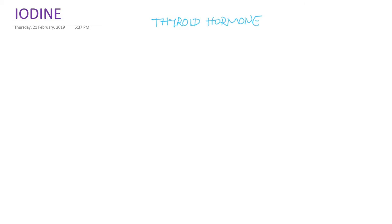There are two thyroid hormones: T3 and T4. T3 is called triiodothyronine, and T4 is tetraiodothyronine — meaning this thyroid hormone contains an important trace element, iodine. This thyroid hormone is synthesized from the thyroid gland, which is located in front of the neck. It has got two lobes connected by an isthmus.